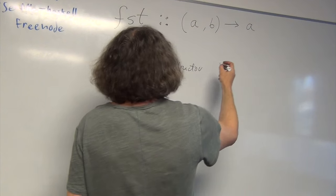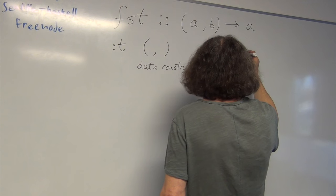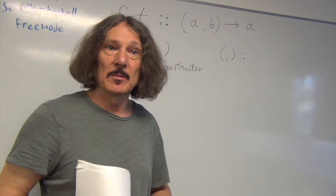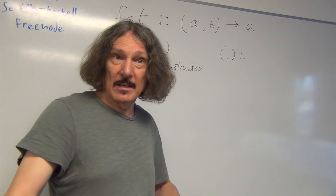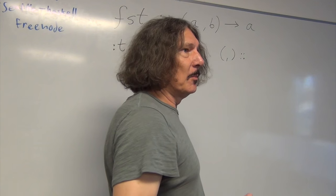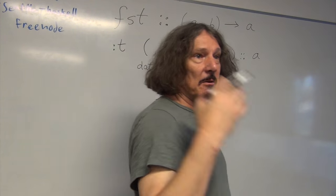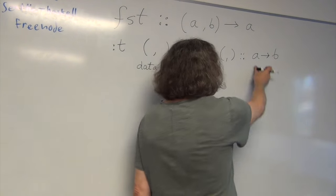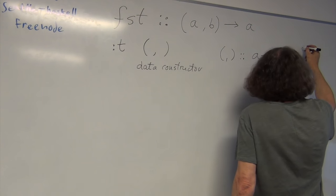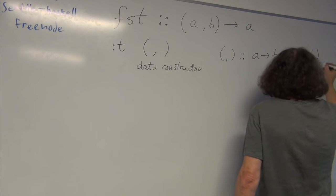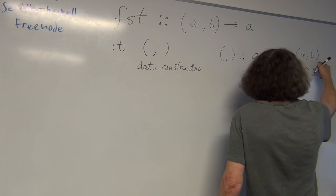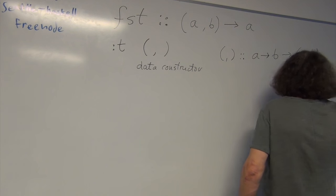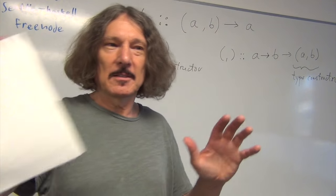The data constructor `(,)` is a function that constructs a pair. It needs two arguments: one for the first component of some arbitrary type A, and one for the second component of arbitrary type B, possibly different from A. The result is a pair of A and B. The `(,)` here is actually the type constructor as well. Are you already confused about data constructors and type constructors, especially since they have the same name in this case?